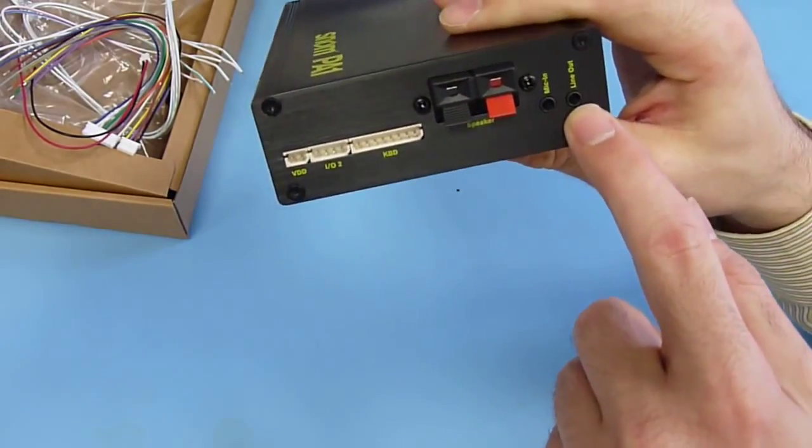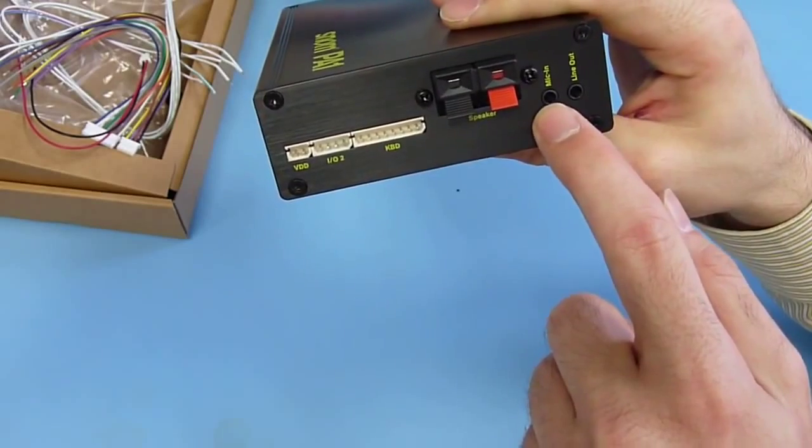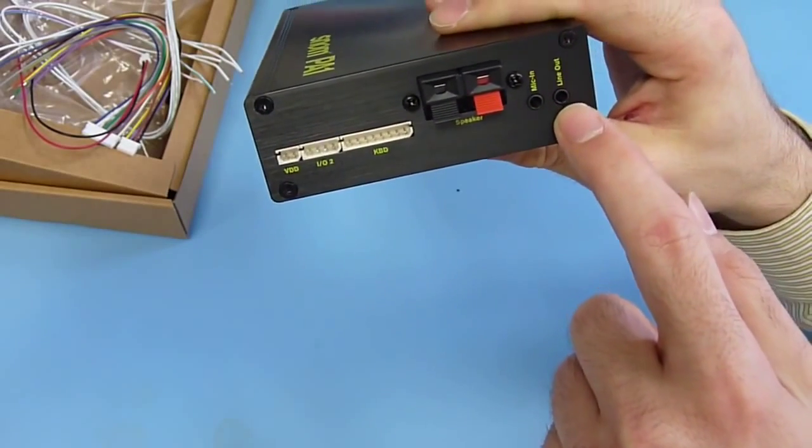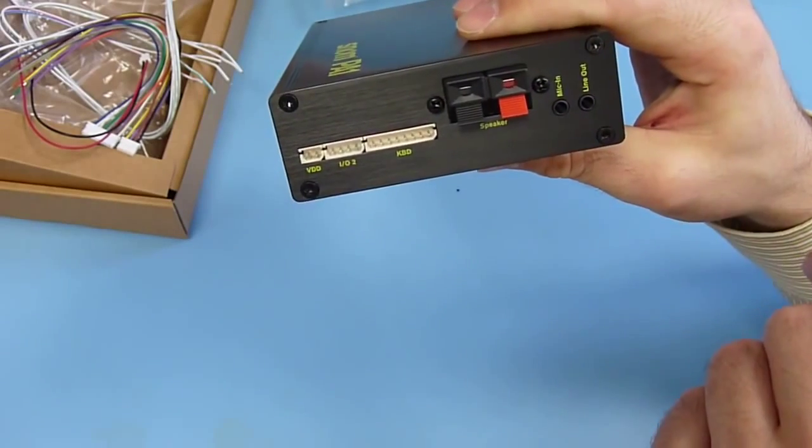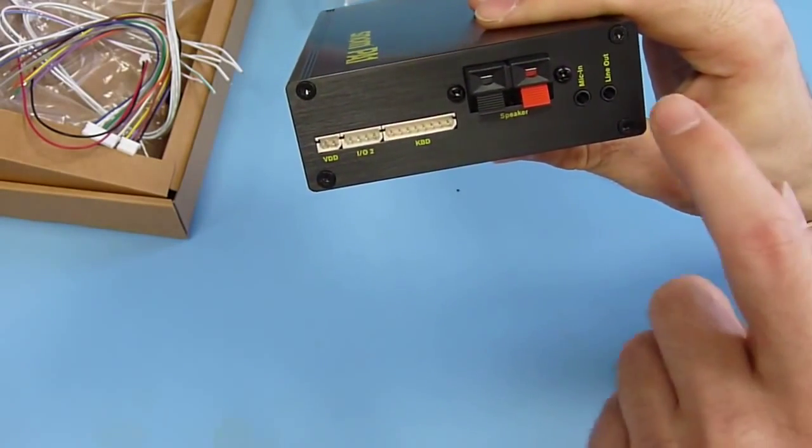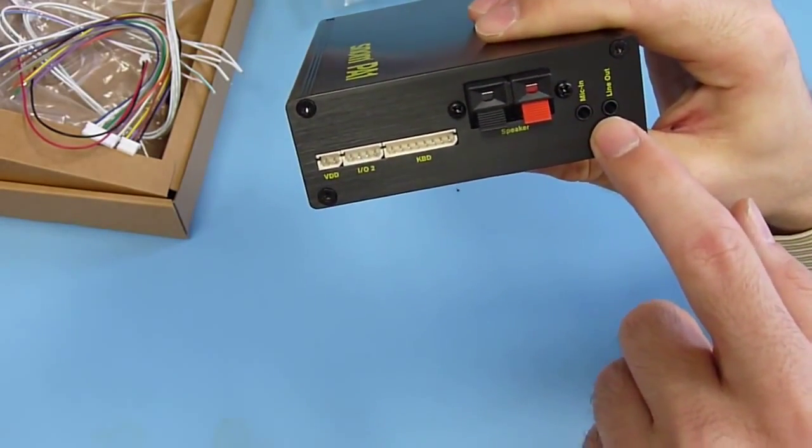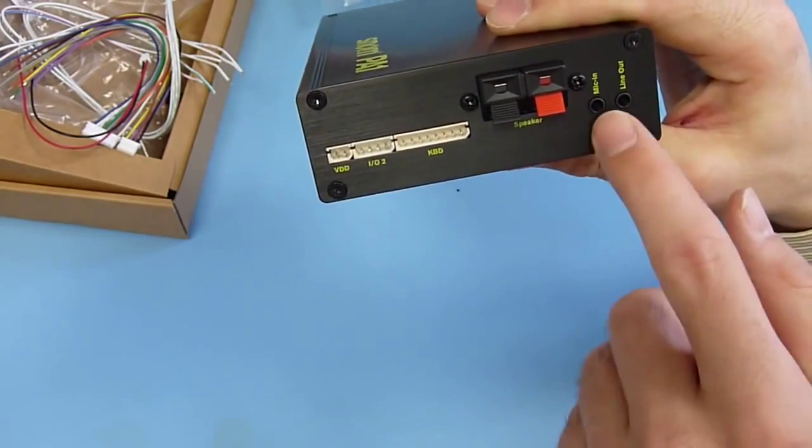Then you have separate line input, microphone in and line out. So there you can connect an analog headset. That is not the one which is known in the mobile phone world because this is only one plug.